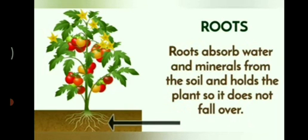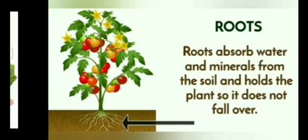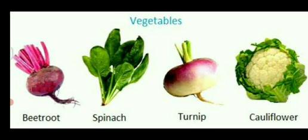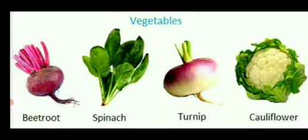Here are some pictures of roots which we eat as vegetables. Like beetroot, turnip, cauliflower are the roots which we eat as vegetables.